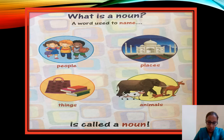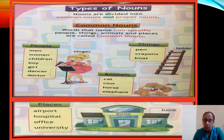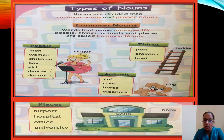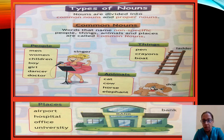Now let's move on to types of nouns. Nouns are divided into common nouns and proper nouns. So there are two types of nouns: one is called common noun and the other one is called proper noun.